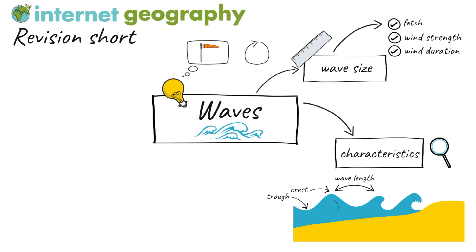Waves have a circular orbit which becomes elliptical closer to the shore due to friction slowing the base of the wave. As waves move into shallow water, they begin to stack up. As frictional drag with the seabed increases, the base of the wave is slowed down, so the top part is travelling faster, causing the wave to tilt, break, and move towards the shore in the surf zone.